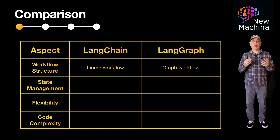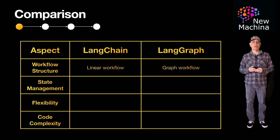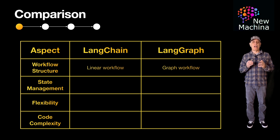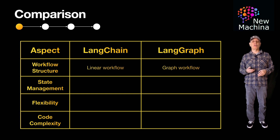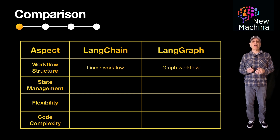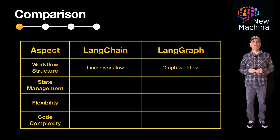LangGraph, as the name implies, is designed out of the box to handle graph-style workflows. Being able to handle graph-style workflows means being much better at handling complex, nonlinear workflows, which include nested branching, merging, iterations, cycles, and loops. Agentic and multi-actor use cases tend to require more complex workflows, so LangGraph tends to be a good fit for these types of systems.